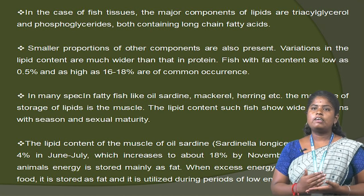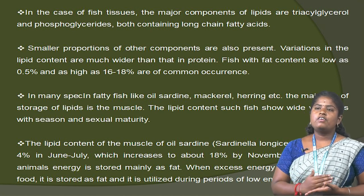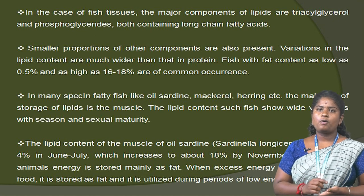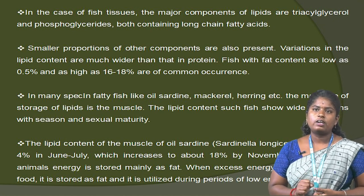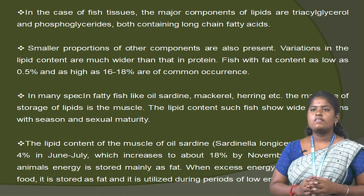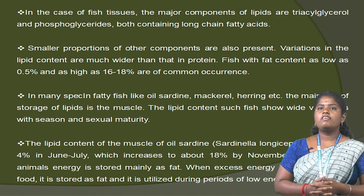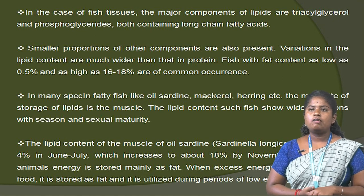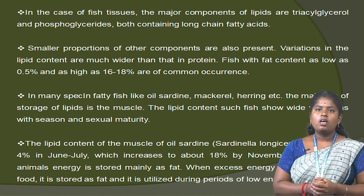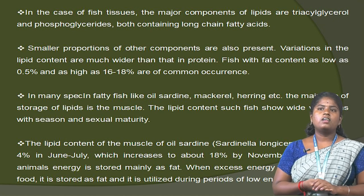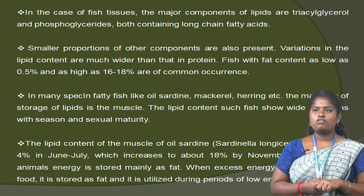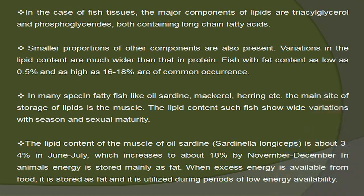Variations in lipid content are much wider than in protein. Fish with fat content as low as 0.5% and as high as 16 to 18% are common. In many species — fatty fish like oil sardine, mackerel, herring, etc. — the main site of lipid storage is the muscle. The lipid content of such fish shows wide variation with season and sexual maturity. The lipid content of the muscle of the oil sardine is about 3 to 4% in June to July, which increases to about 18% by November to December.